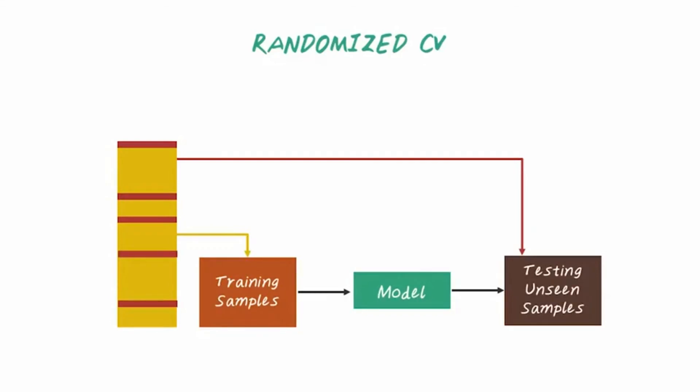The advantage of this method over the k-fold cross-validation is that the proportion of the training and validation sets does not depend on the number of folds. The disadvantage of this method is that some observations may never be selected into the validation set because of the randomization process.